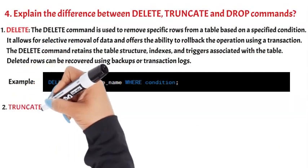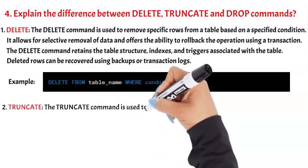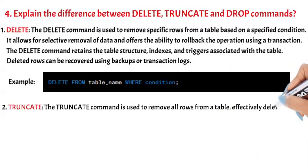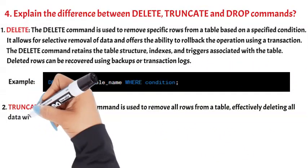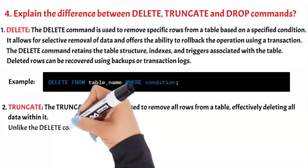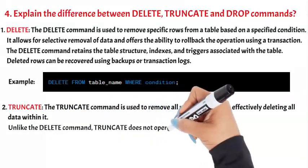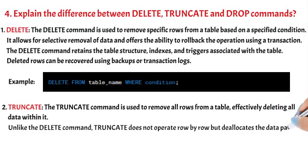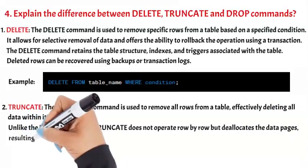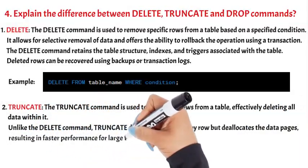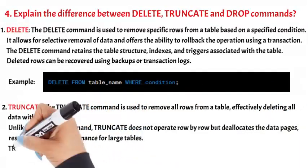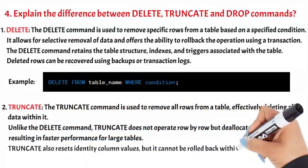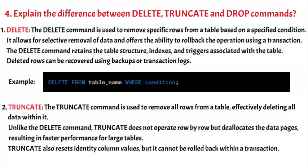2. Truncate. The Truncate command is used to remove all rows from a table, effectively deleting all data within it. Unlike the Delete command, Truncate does not operate row by row but deallocates the data pages, resulting in faster performance for large tables. Truncate also resets identity column values, but it cannot be rolled back within a transaction.